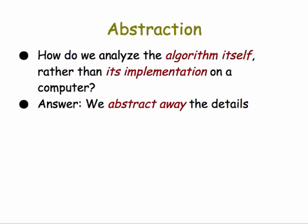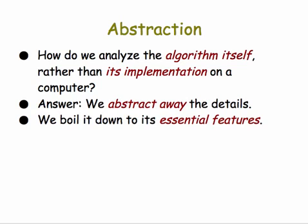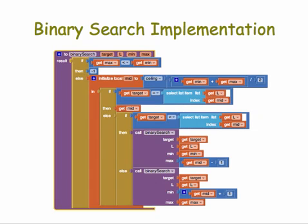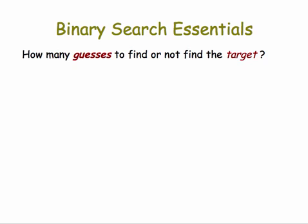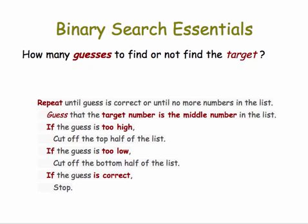The answer is we abstract away the details. So here's our friend abstraction again. We boil the algorithm down to its essential features. For example, here's the implementation of binary search in App Inventor. Yikes! Let's not even look at the details. What we can boil it down to is the essential question of how many guesses does it take to find or not find the target thing you're searching for when you're doing a binary search. And if you boil it down to that then you can express it in terms of this simple pseudocode.